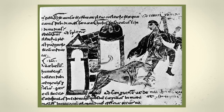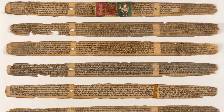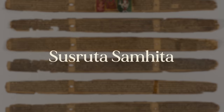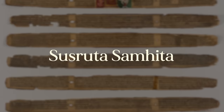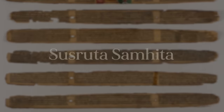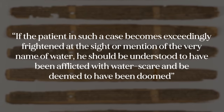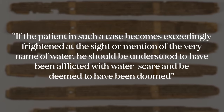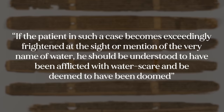By about 400 years later, healers recognized that rabies probably spread by something in the dog's saliva, kind of like how a snake bite has a special venom. But the most detailed ancient account comes from ancient India's Susruta Samhita, which dedicates about a thousand words to rabies and accurately describes its symptoms, including hydrophobia. The Susruta Samhita comments: 'If the patient becomes exceedingly frightened at the sight or mention of the very name of water, he should be understood to have been afflicted with water scare and be deemed to have been doomed.' This is why historians are confident that ancient scholars were documenting rabies — the combination of dog bite plus hydrophobia is pretty uniquely a rabies thing. Even the long incubation period has been documented for thousands of years.